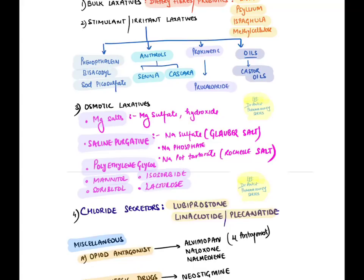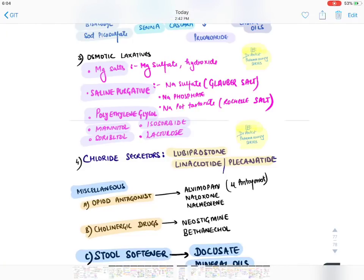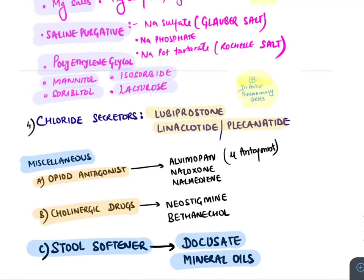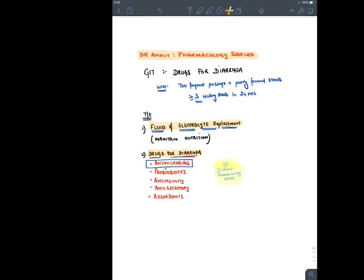Chloride secretors for resistant constipation: lubiprostone (PGE1 analog), linaclotide and plecanatide (stimulate guanylyl cyclase receptors, increasing chloride secretion). Miscellaneous: opioid antagonists — methylnaltrexone (MOPAN: M = mu, OP = opioid, AN = antagonist), naloxone, nalmedine — used in opioid-induced constipation. Cholinergic drugs (neostigmine, bethanechol) for post-operative paralytic ileus. Stool softeners: docusate and mineral oils. This is the complete list of laxatives and purgatives.